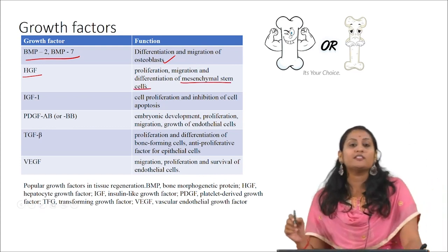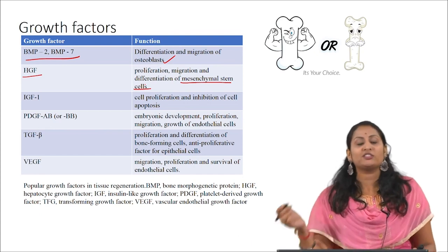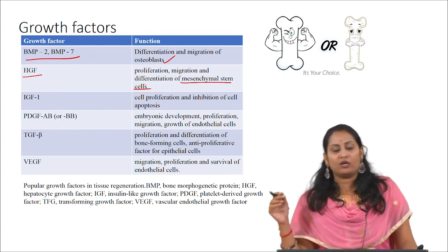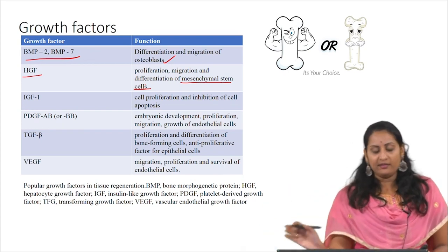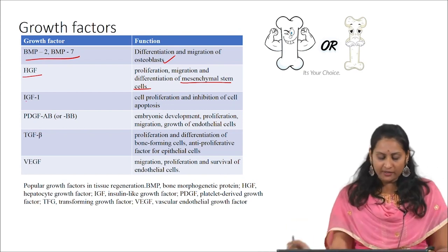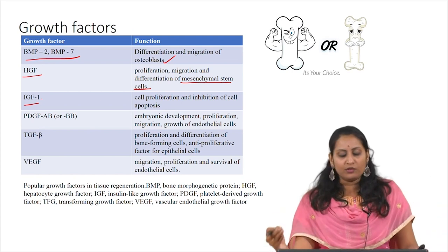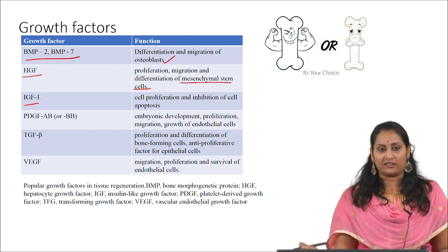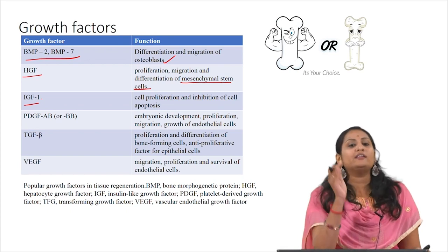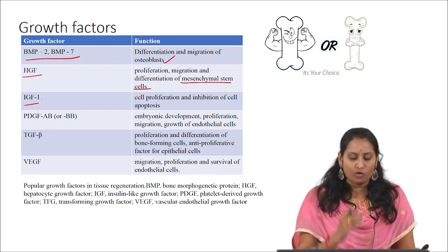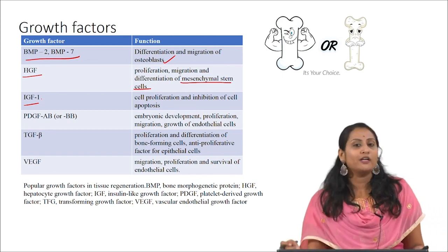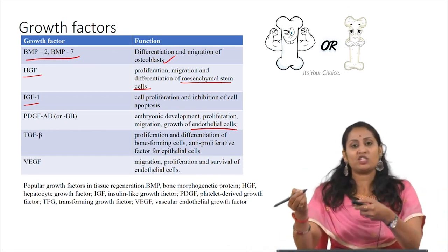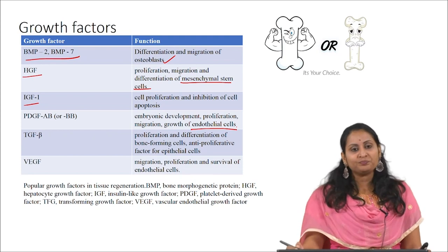Mesenchymal stem cells can develop into many lineages — not only bone, but also cartilage, tendon, or marrow. IGF, insulin-like growth factor, promotes cell proliferation and inhibits cell apoptosis — that is, cell death. PDGF, platelet-derived growth factor, is responsible for embryonic development, proliferation, migration, and growth of endothelial cells.